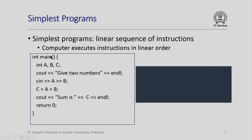This is the main function. The operating system calls this main function, passes control to it, and when it executes, the first statement here is really a declaration. So there is nothing for the computer to execute as far as this declaration is concerned. This is really a directive to the compiler to reserve appropriate amounts of storage in memory and to interpret the bits stored in those locations in the appropriate way. This declaration is saying that there are going to be three variables, all of them of type integer.